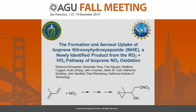Today I'm going to talk about isoprene NO3 chemistry, focusing on the RO2 plus HO2 pathway, and specifically a newly identified product called isoprene nitroxyhydroxy epoxide, abbreviated as INHE, shown here pictorially on the right.